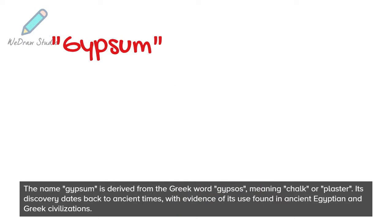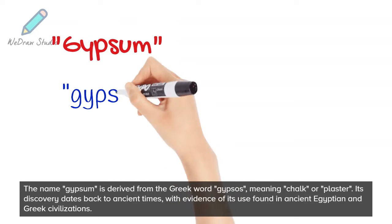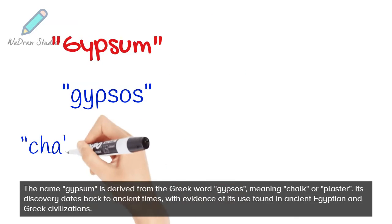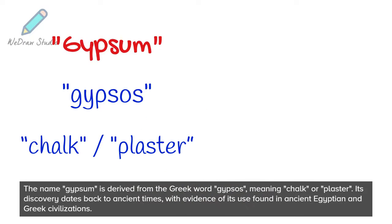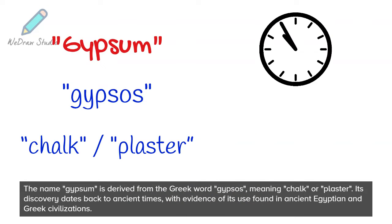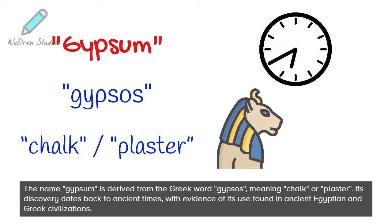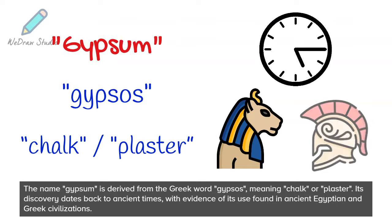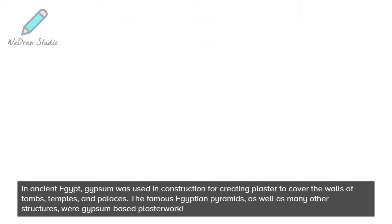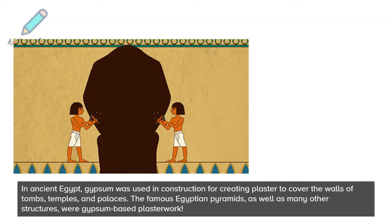The name gypsum is derived from the Greek word 'gypsos,' meaning chalk or plaster. Its discovery dates back to ancient times, with evidence of its use found in ancient Egyptian and Greek civilizations.